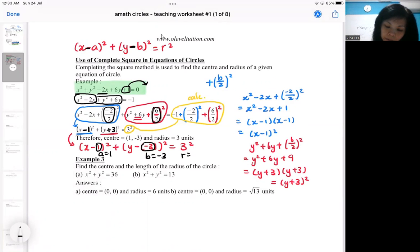And then the radius is 3. That's why the center is 1 minus 3. So take a look. The center is 1 minus 3. The radius is 3.